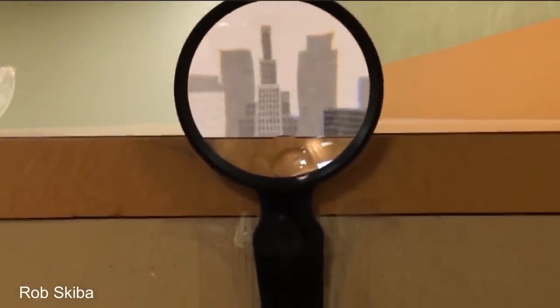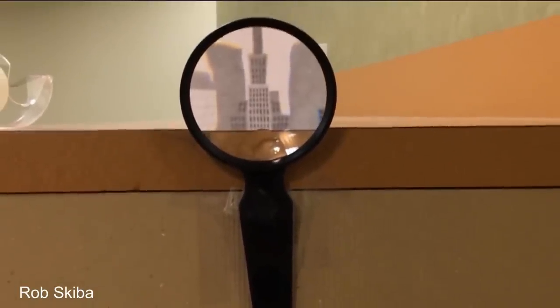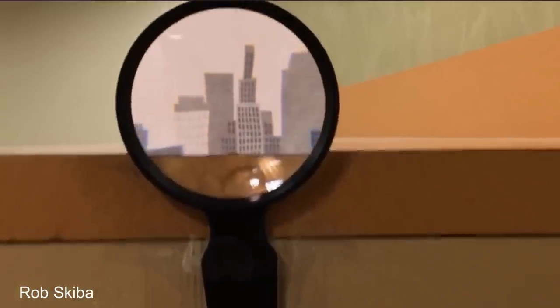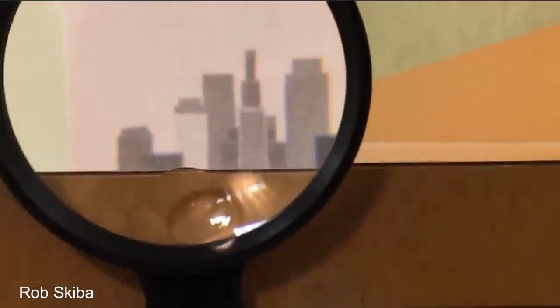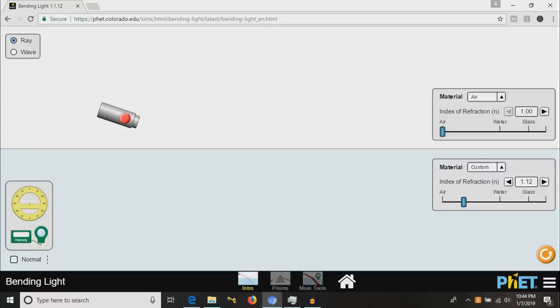Light does bend in Earth's atmosphere, which is called refraction, and you could even say it acts like a lens, sort of, but it does not work the way Skiba claims it does. Let's talk about how light refraction actually works. Light refraction occurs when light goes through substances of different densities. When light passes from a less dense substance to a more dense substance, or vice versa, the light is refracted. That is to say, it bends.